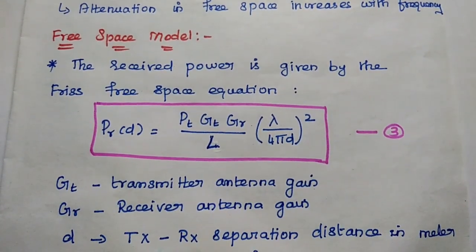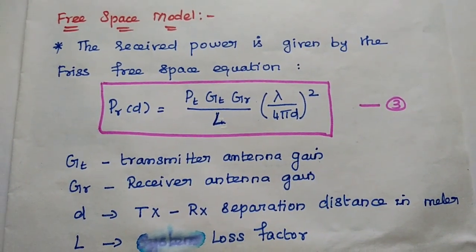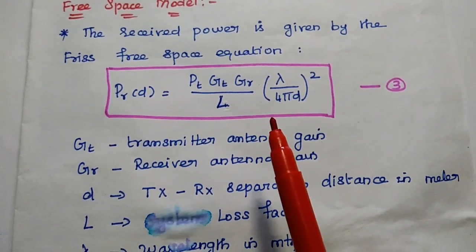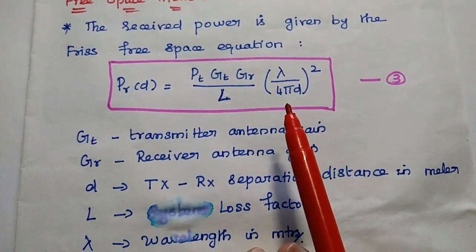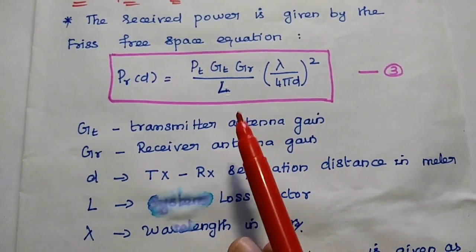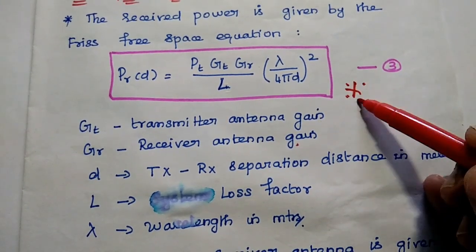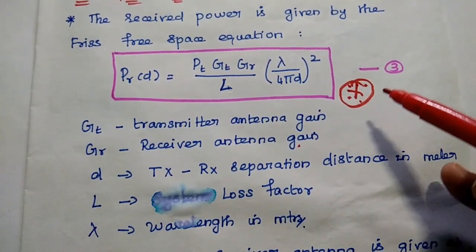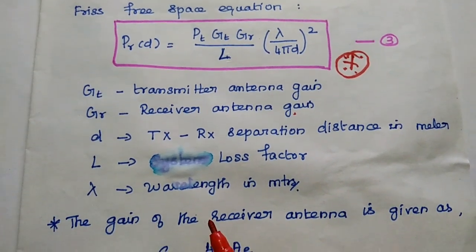Next, we are going to find the received power in free space. The received power is given by the free space equation: Pr(D) = (Pt · Gt · Gr · (λ / 4πD)²) / L. Here, L is the system loss factor. This equation is very important for defining the propagation model because it calculates the received signal strength in the free space model.